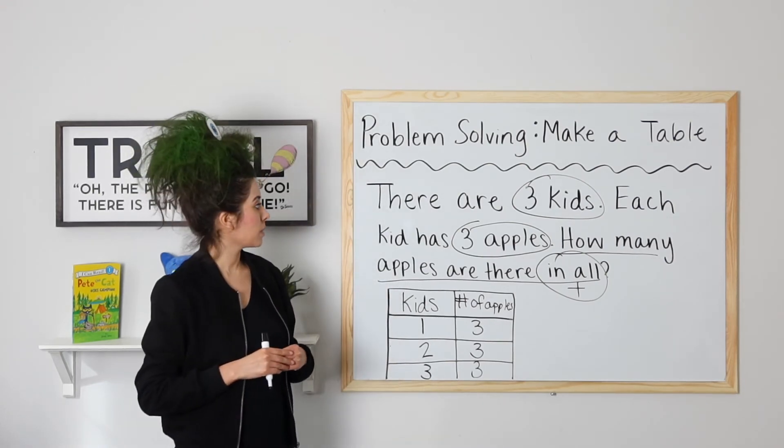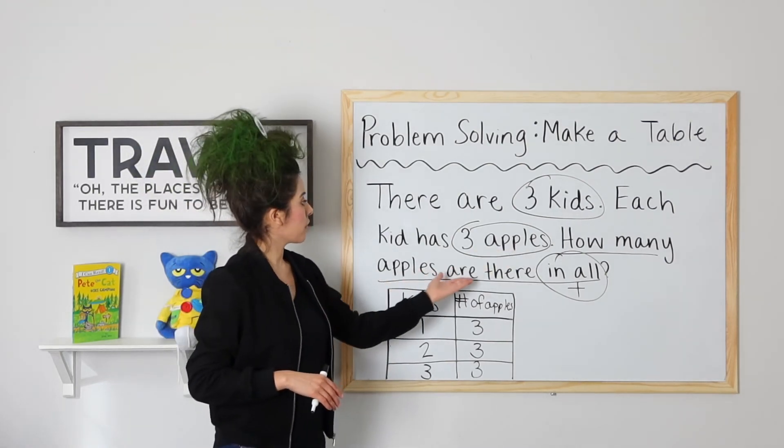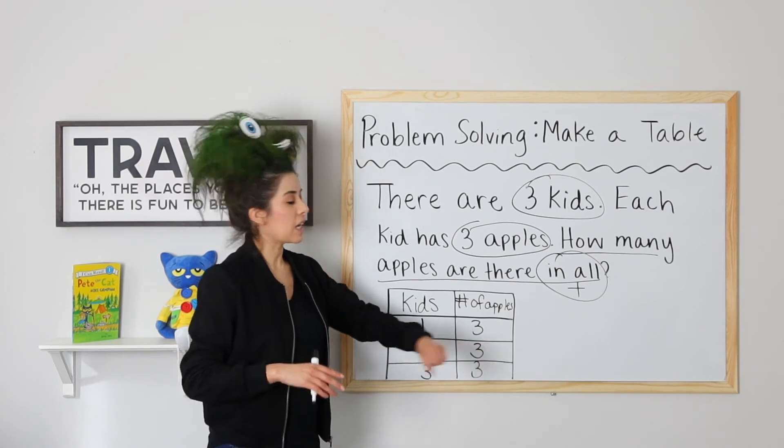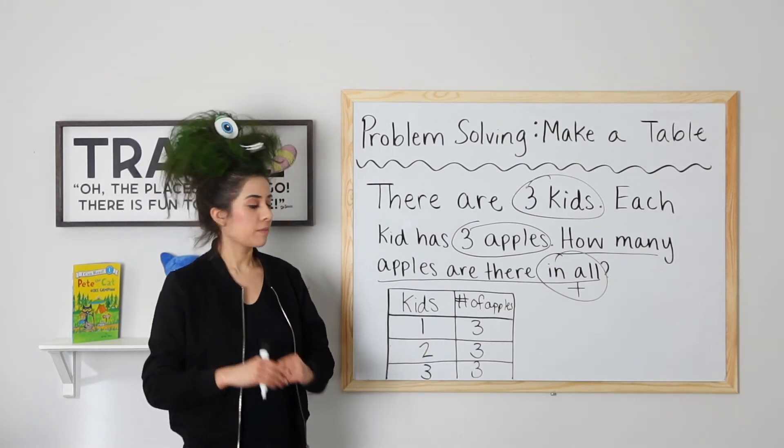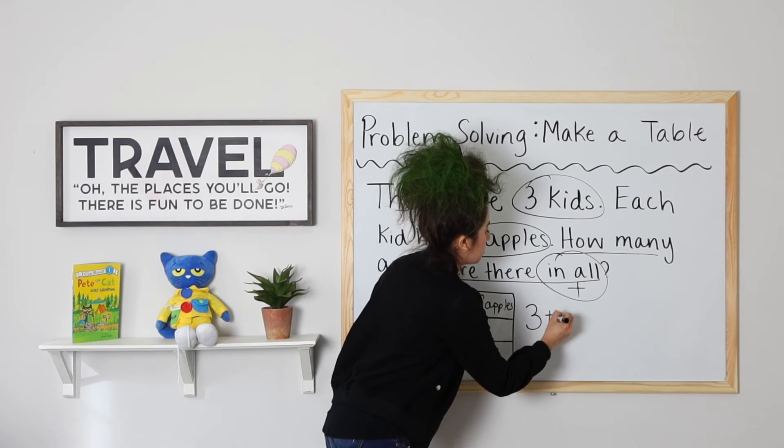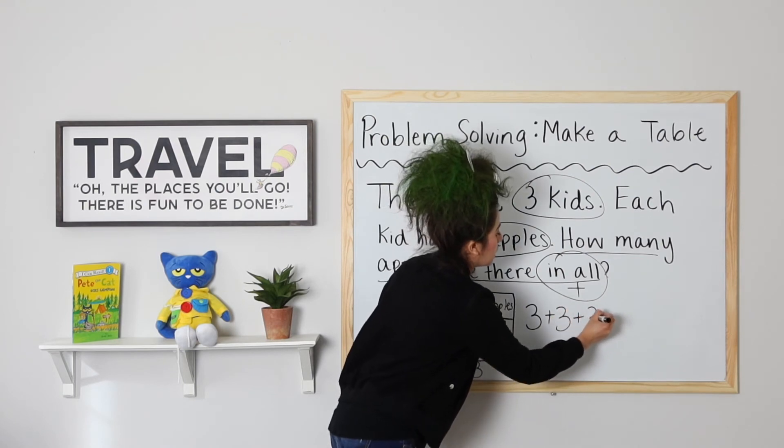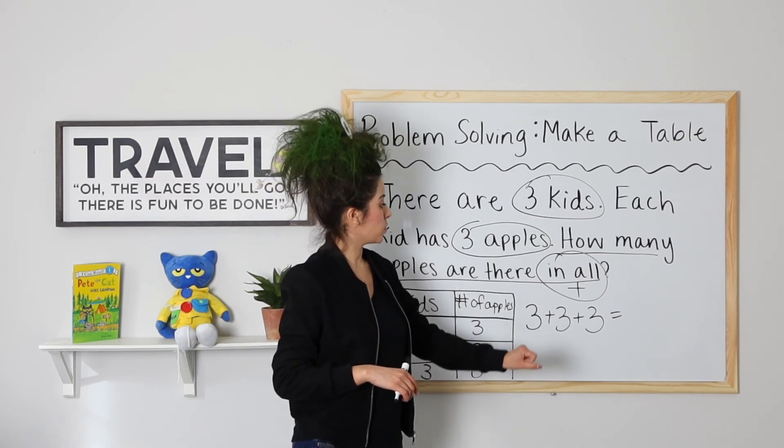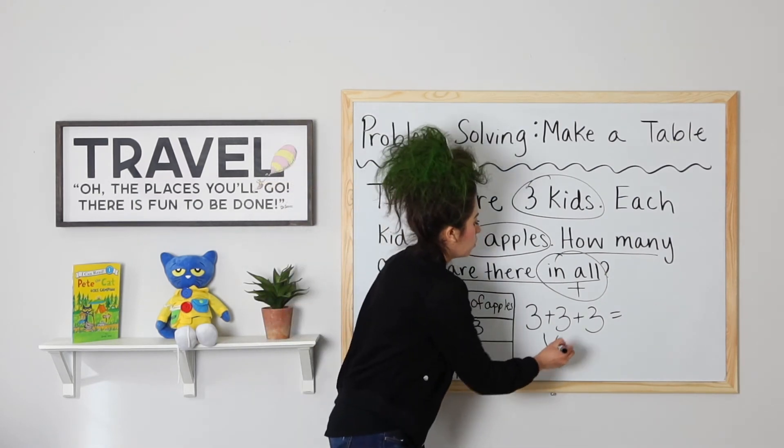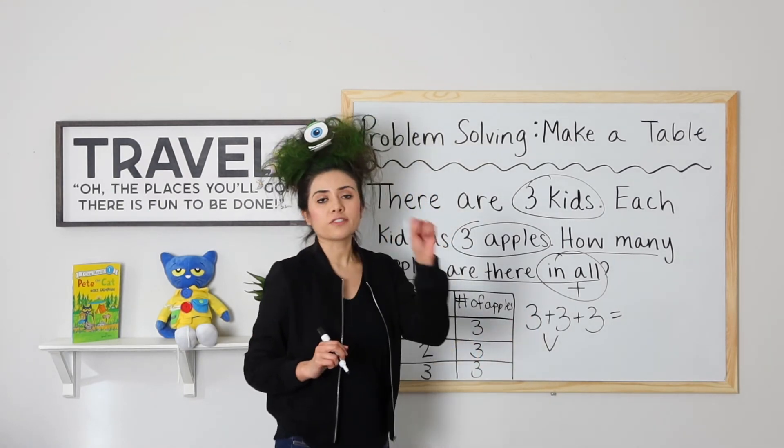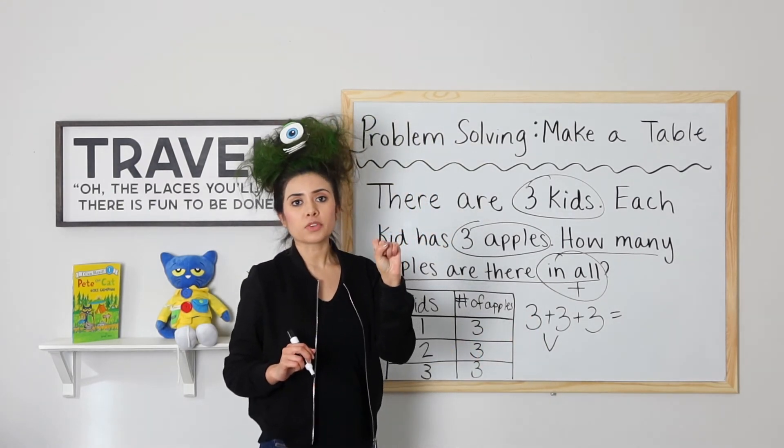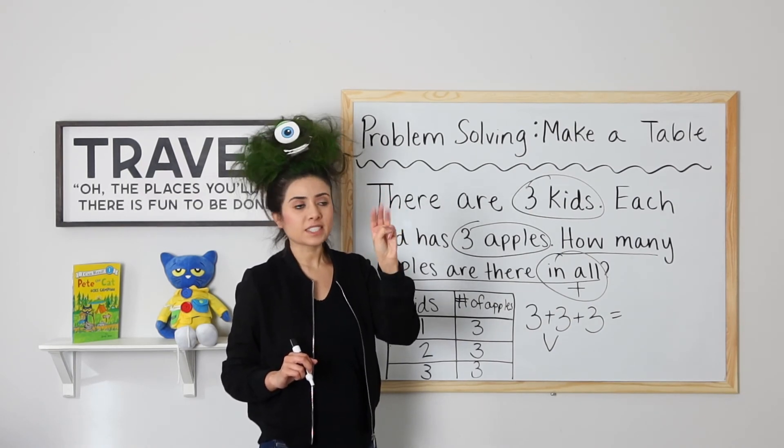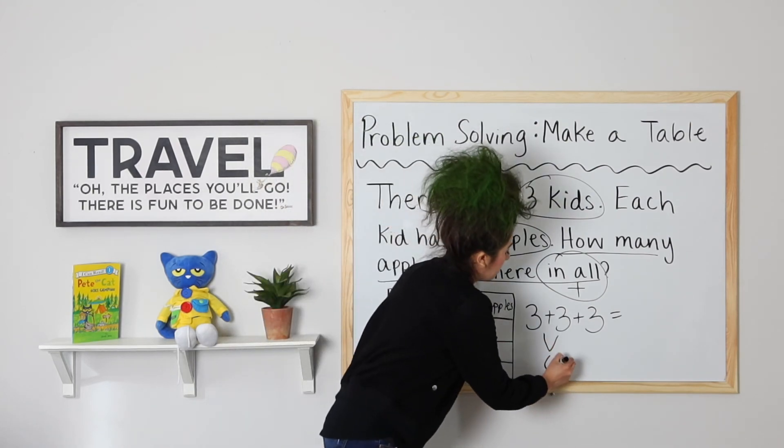So if we go back to the word problem, it says how many apples are there in all? Remember, in all means to add. So we're going to go ahead and take all these apples and add them up. Three plus three plus three equals what? Well, let's go ahead and start by adding two of them first. What is three plus three? Let's hold a fist and say three and jump up three more. Three, four, five, six. Three plus three is six.